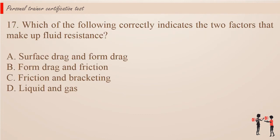Question 17. Which of the following correctly indicates the two factors that make up fluid resistance? a. Surface drag and form drag. b. Form drag and friction. c. Friction and bracketing. d. Liquid and gas.